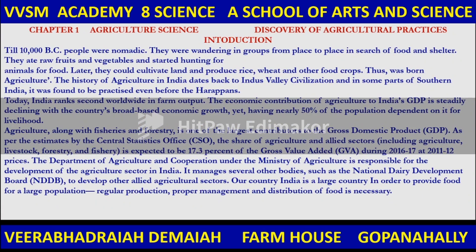I would like to give a brief introduction to agricultural science and the discovery of agricultural practices. In ancient days, nomadic tribes were wandering in groups from place to place in search of food and shelter. They ate raw materials, fruits, vegetables, and started hunting animals for food. Later, they could cultivate land and practice agriculture and produce essential food materials like rice, wheat and other food crops.